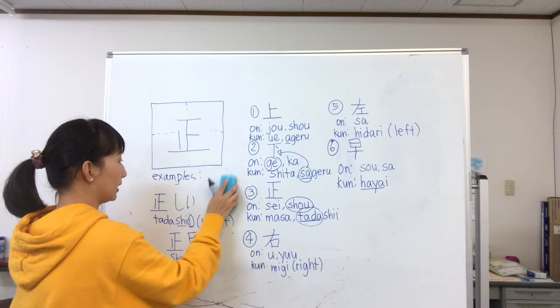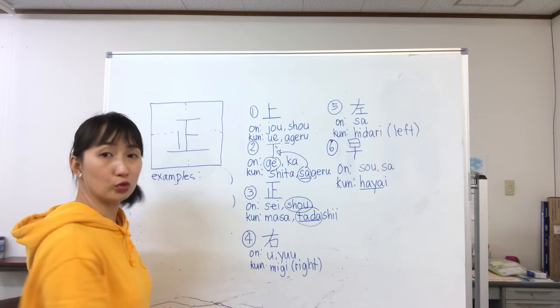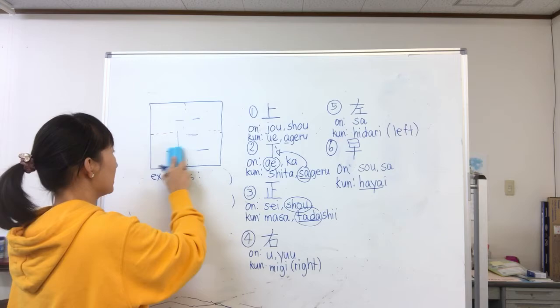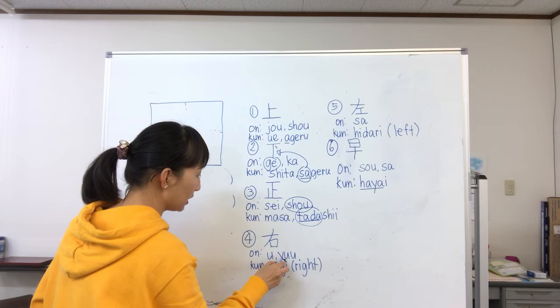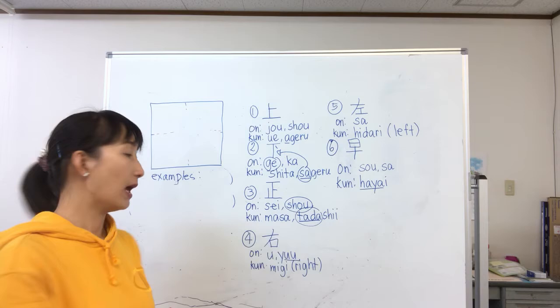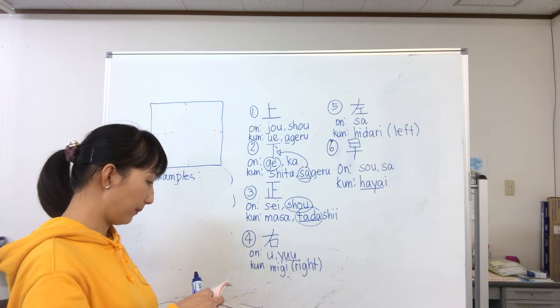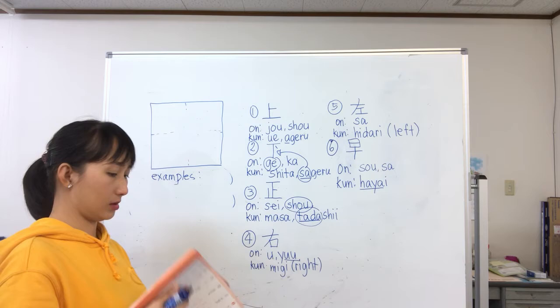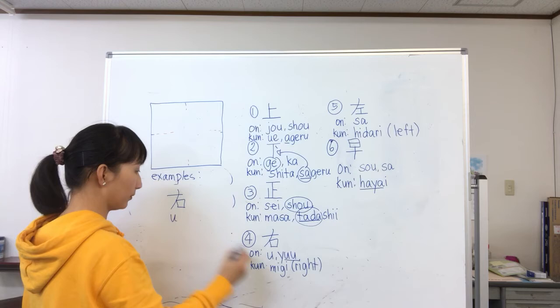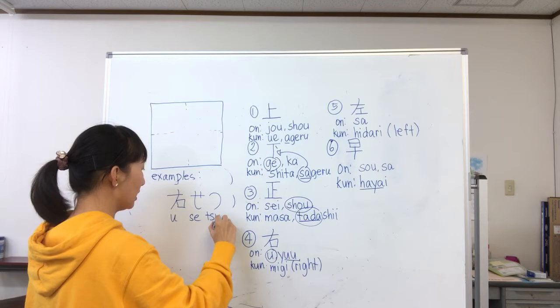Our next kanji is this one. Its onyomi are u and yuu — note you need to elongate the u sound, so it's yuu. Its kunyomi is migi, which means right. The example I have is usetsu, which means turn right.